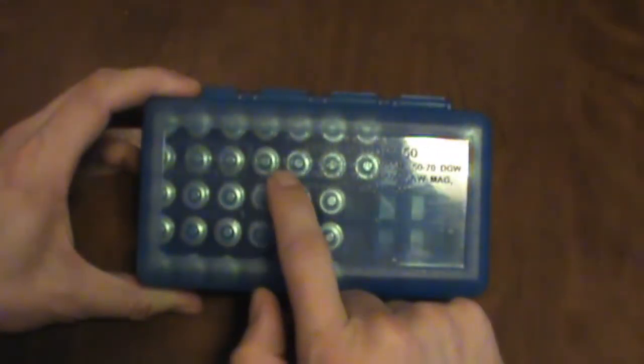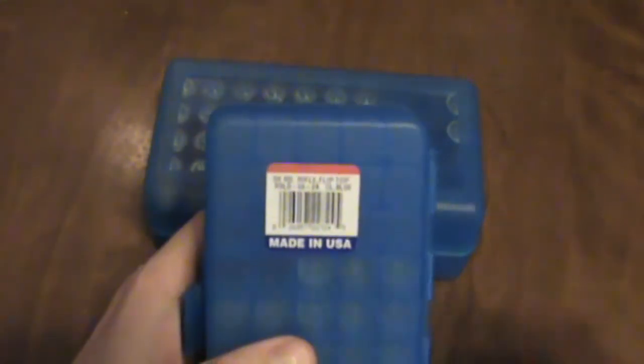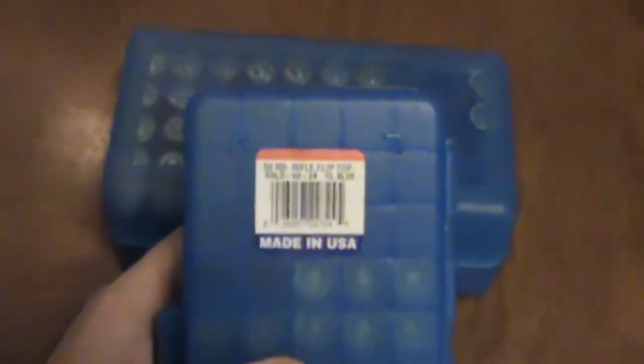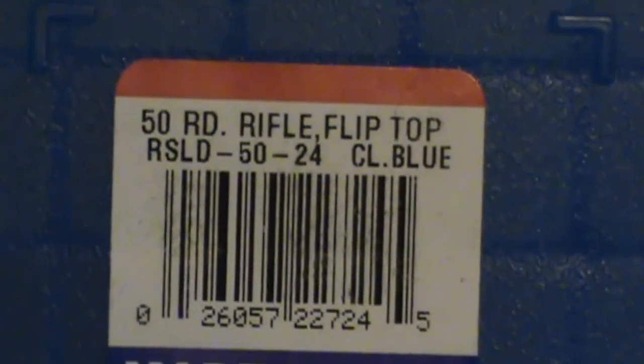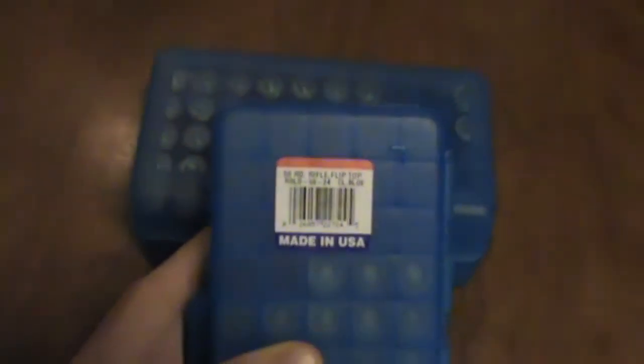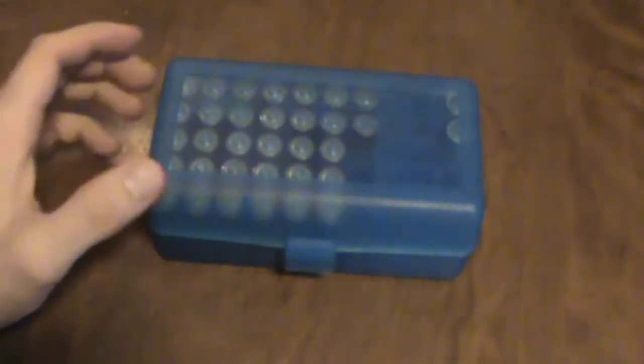Specifically, this is the model RSLD-50 as specified on the lid. If you go to the reverse side on the label, at least where I picked this up at, the label specifies RSLD-50-24. And this is designed to hold up to 50 rounds of 500 Smith & Wesson Magnum.